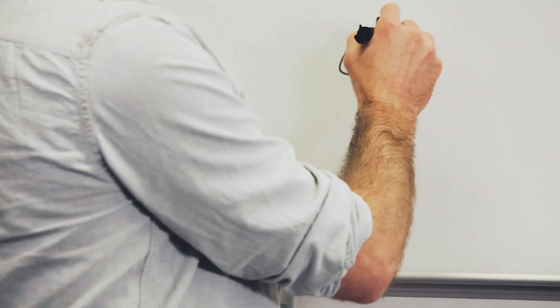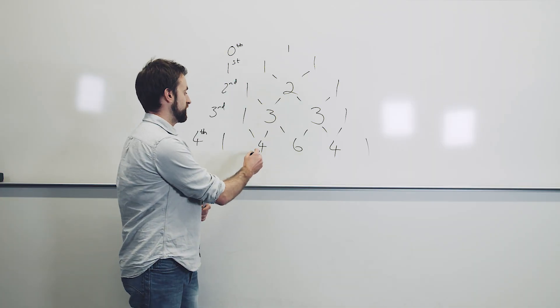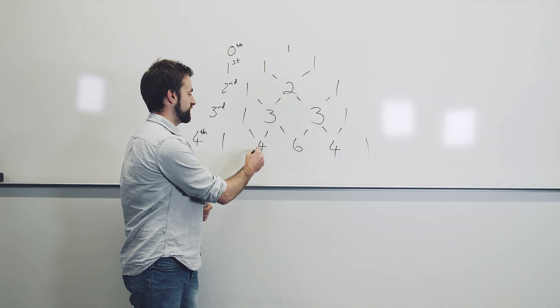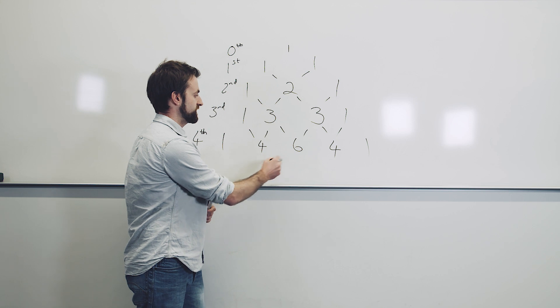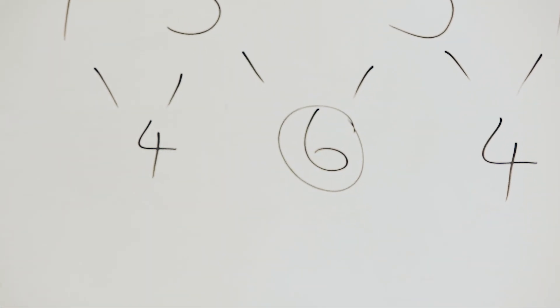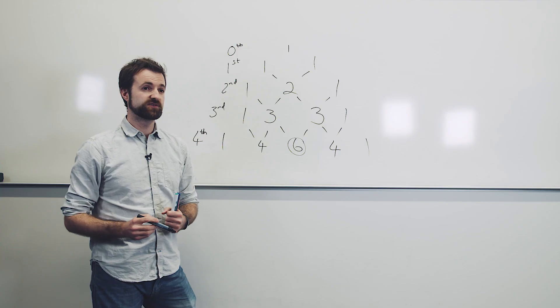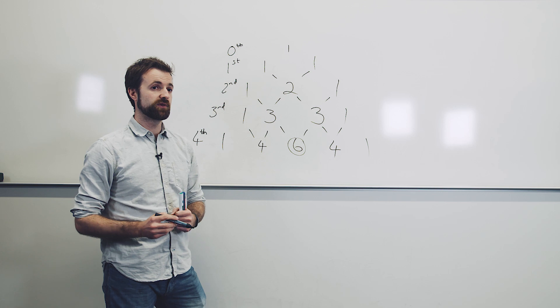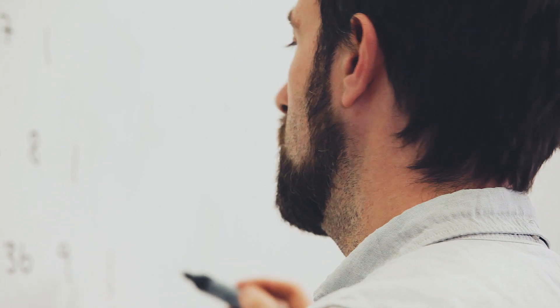These binomial coefficients can be simply read off from the relevant row of Pascal's triangle. For four people, you look at the fourth row and find the second non-one element. That element is six, and it tells you there are six ways of choosing two people from a group of four.